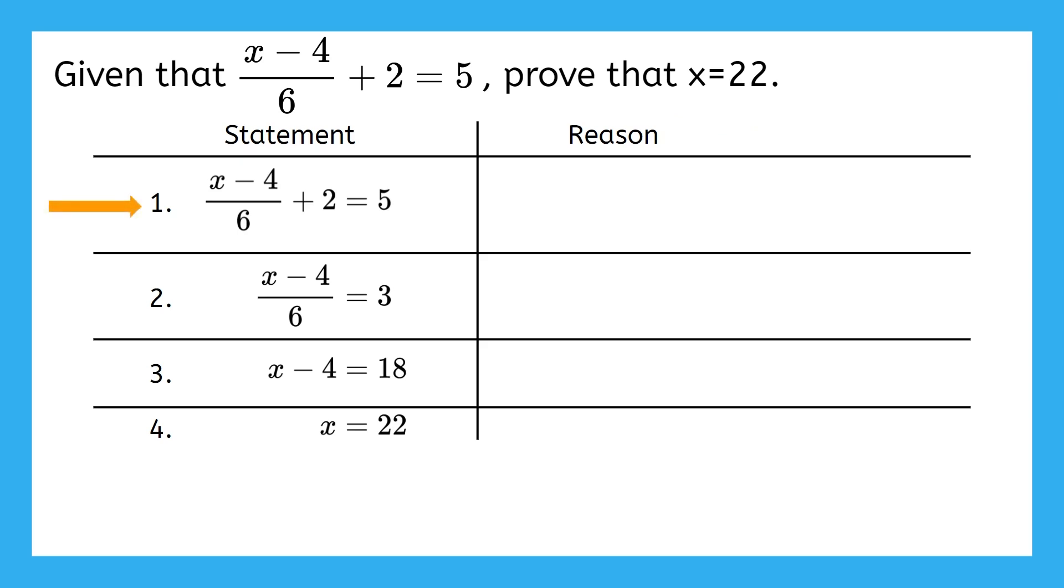My first statement is that x minus 4 over 6 plus 2 equals 5. How do I know that's true? Well, it's because this was given to us in the problem directions. So our reason is just given.